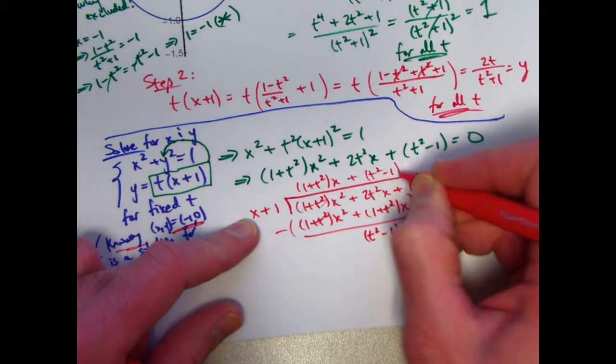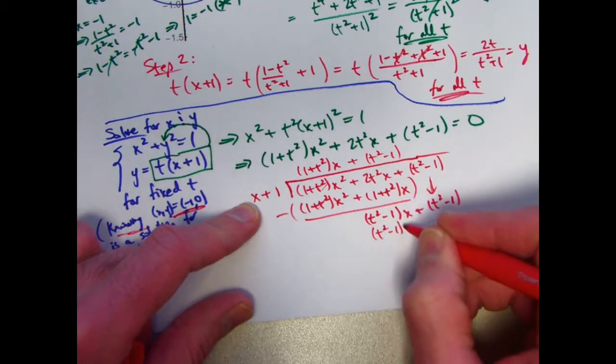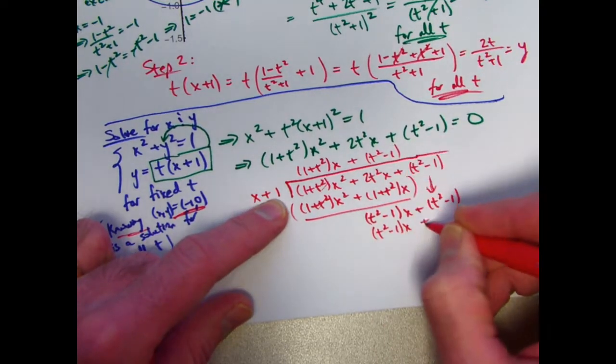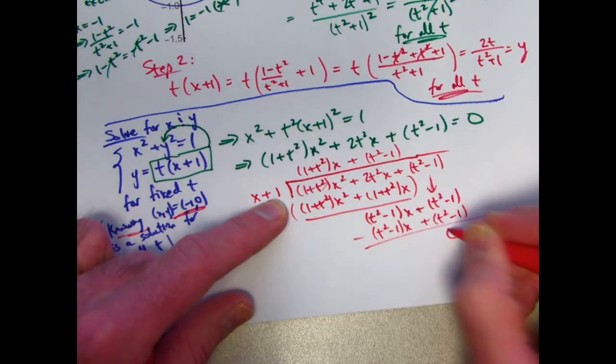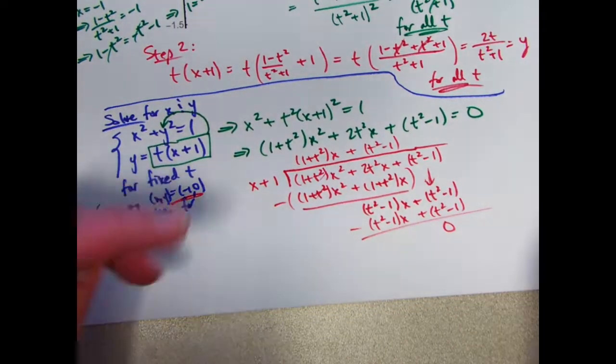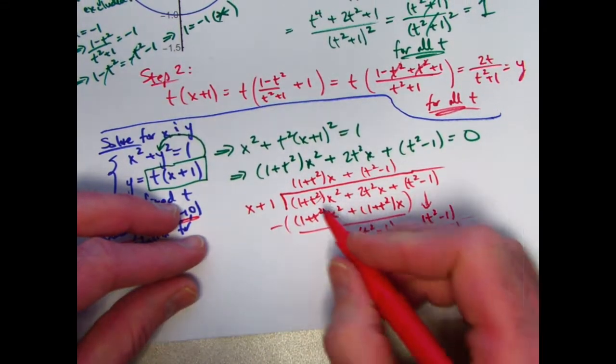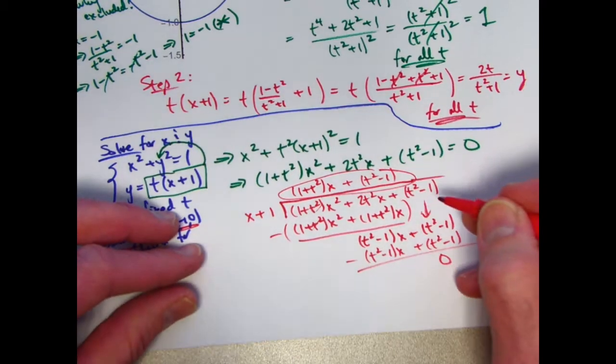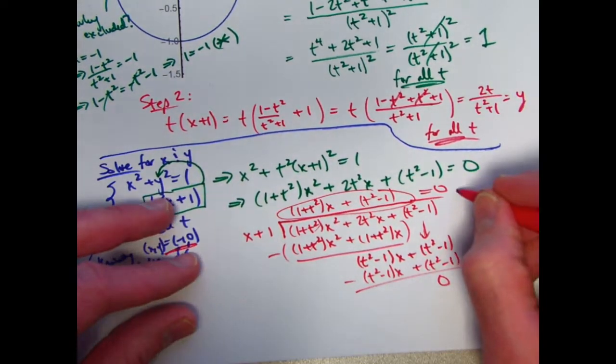What do I need to multiply x by to get this thing? I need to multiply it by t²-1. And if you do so, you get (t²-1)x, and then also multiply it by 1, giving you a t²-1. Subtract. Everything cancels. You're left with 0. That's what I wanted. A remainder of 0. x+1 divides this thing. And this is the quotient. And if you set that equal to 0, that's going to give you x as a function of time.